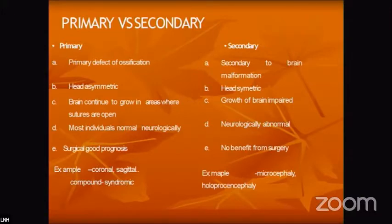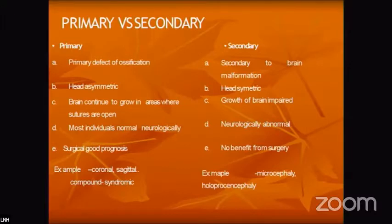In primary synostosis, there would be a defect of ossification. The head would be asymmetric, and the asymmetric brain continues to grow in areas where sutures are open. Most individuals have normal neurological functions, and surgically there is a good prognosis. Examples include coronal, sagittal, and other compound syndromic situations.